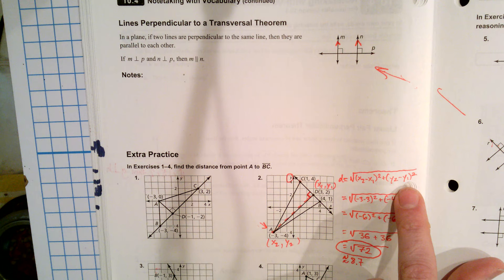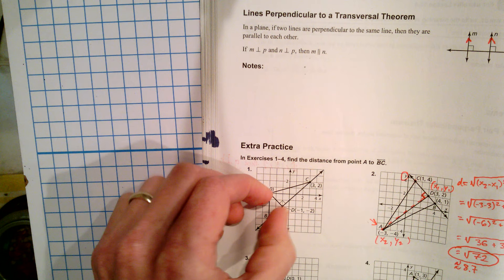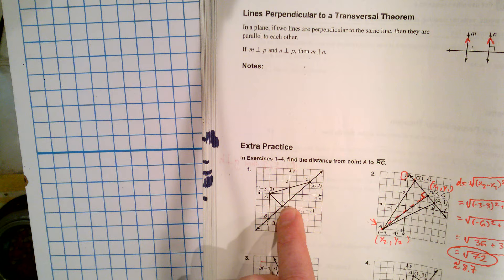All right. Our last idea is this, lines perpendicular to a transversal theorem. Here I've got two lines and I've got a transversal P, and P happens to form a 90 degree angle with both of the lines. What does that mean? That means the two lines are parallel. They have to be parallel because it's forming these corresponding 90 degree angles.